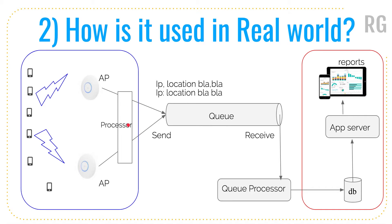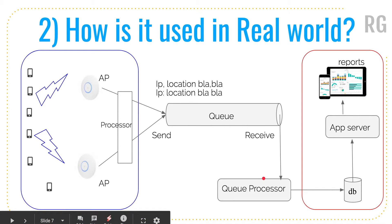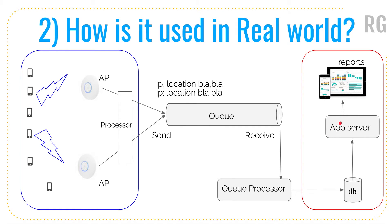The log information is passed into a queue — each line could be one message — using a distributed messaging queue like Apache Kafka. On the receiving end, it receives information line by line. A queue processor processes this information and puts it into a database. An app server can then query the data and generate different reports shown in a dashboard — for example, how many users are accessing a particular access point.